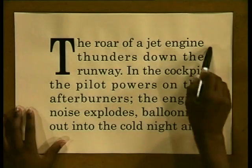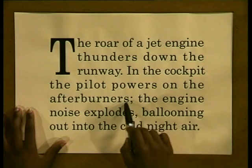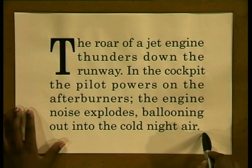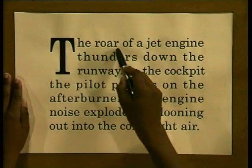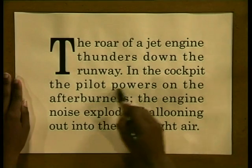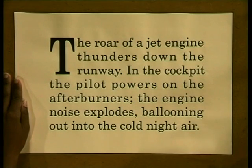Let's have a look at this next paragraph: 'The roar of a jet engine thunders down the runway. In the cockpit, the pilot powers on the afterburners. The engine noise explodes, ballooning out into the cold night air.' By using words with emotive connotations, the journalist is able to paint a vivid picture in the reader's mind. Roar and thunders show just how powerful and impressive the planes are. The pilot does not fly the plane — instead, he powers it, making him seem strong and in control. The noise explodes again shows the might of the planes.